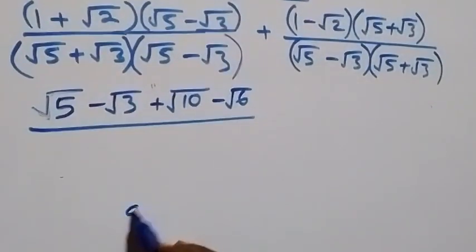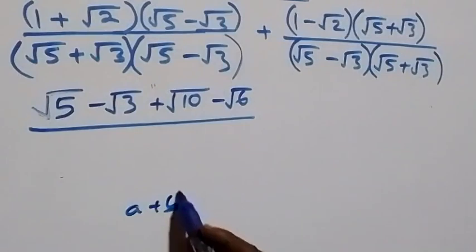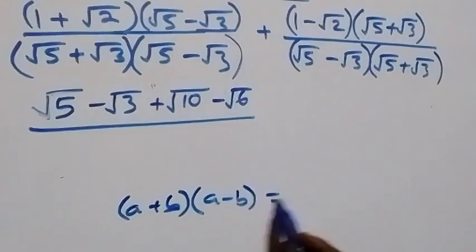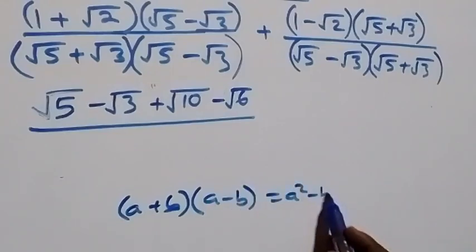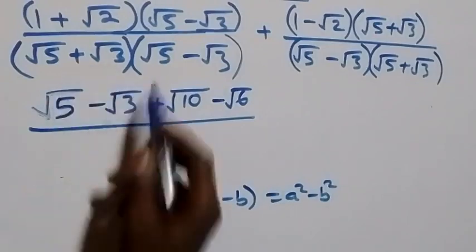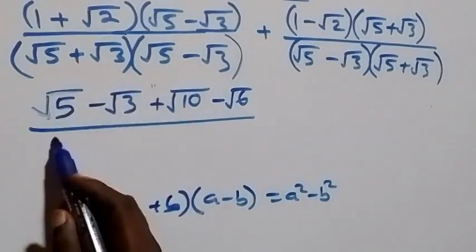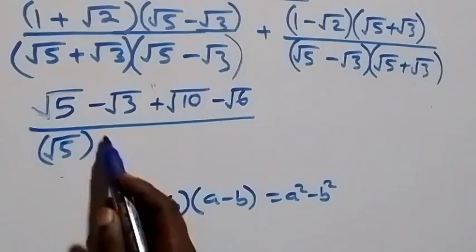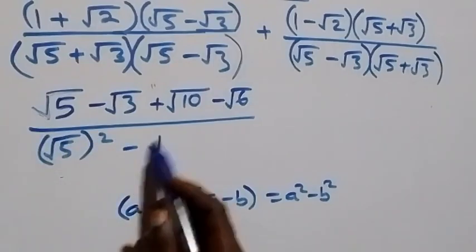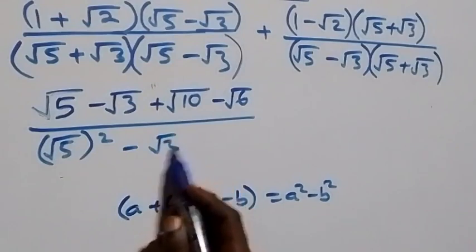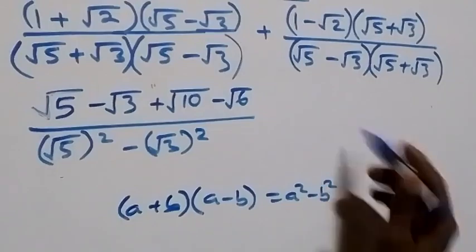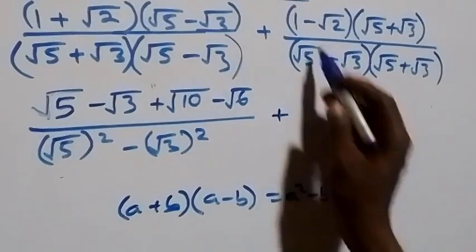For the denominator, we use the identity (a + b)(a − b) = a² − b², so (√5 + √3)(√5 − √3) = √5² − √3² = 5 − 3.